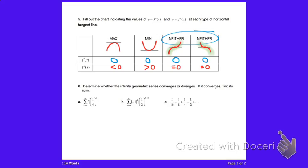Down in problem six, parts a, b, and c, we have infinite geometric series going all the way to infinity. We need to determine if they converge and, if so, what they converge to. In the summation notation, replacing k with zero gives the first term as three times one-fourth to the zero power, which is just three, plus three times one-fourth to the first power, which is three-fourths, and so on.